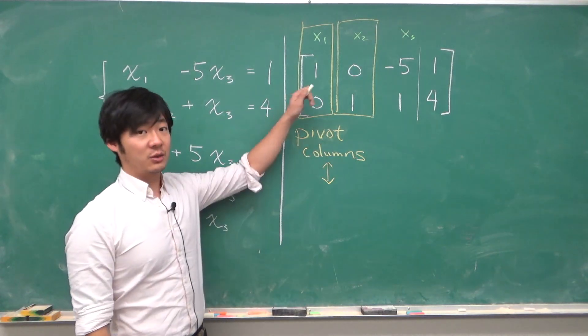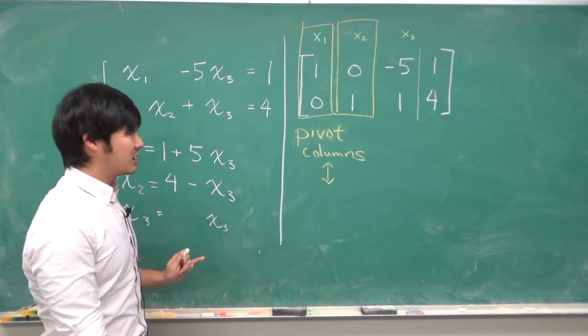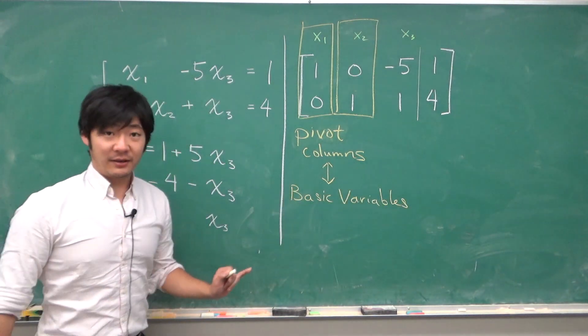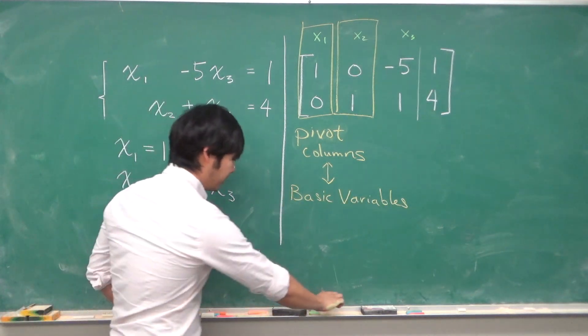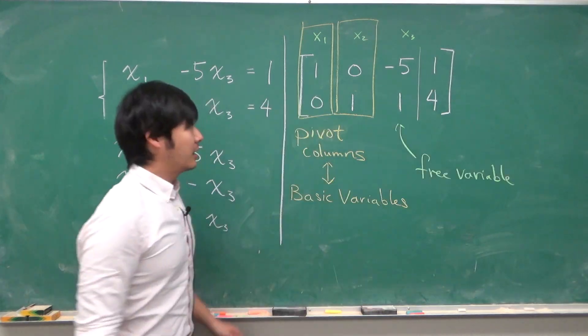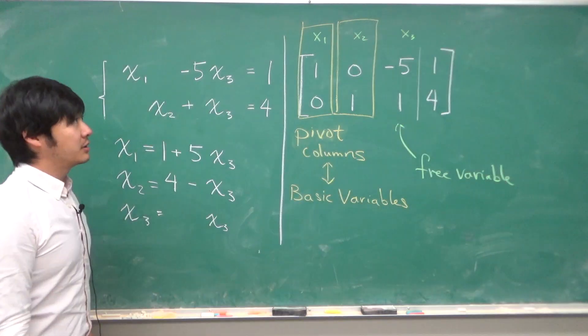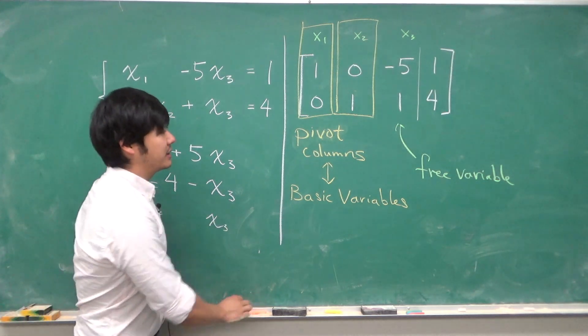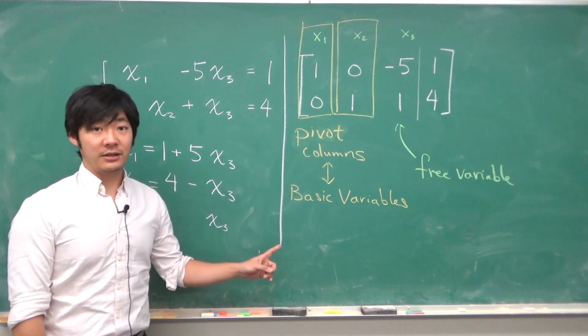The pivot columns with just ones and zeros correspond to basic variables, and the non-pivot column corresponds to a free variable. Here, x1 and x2 are basic variables, and x3 is a free variable.